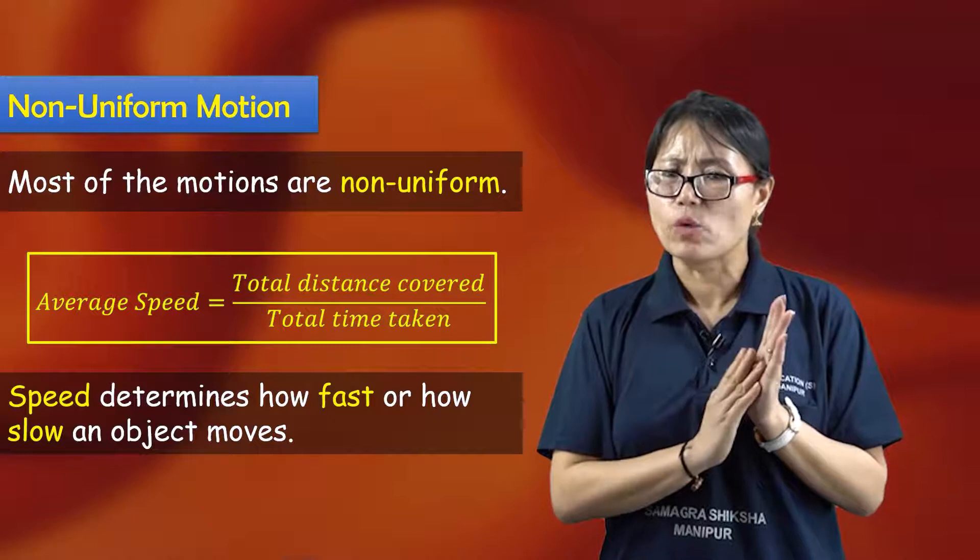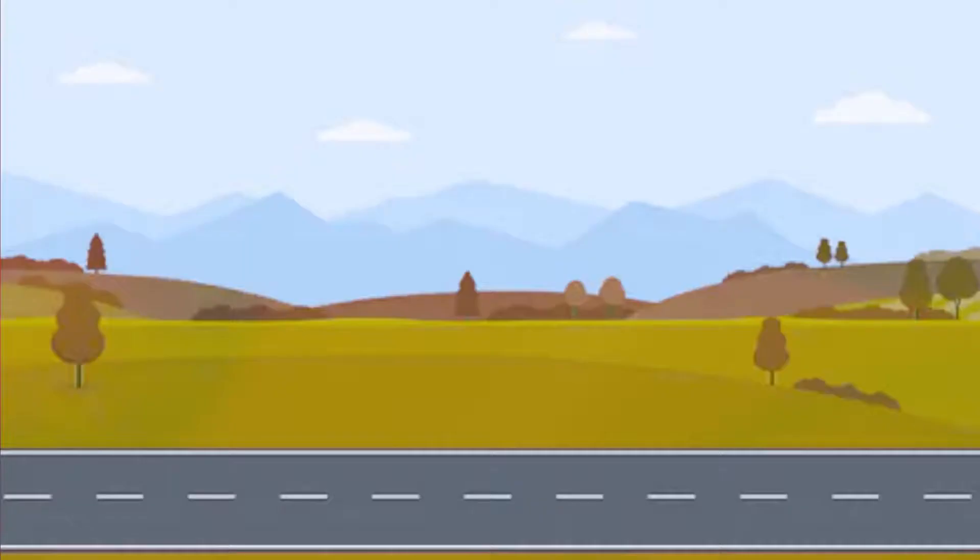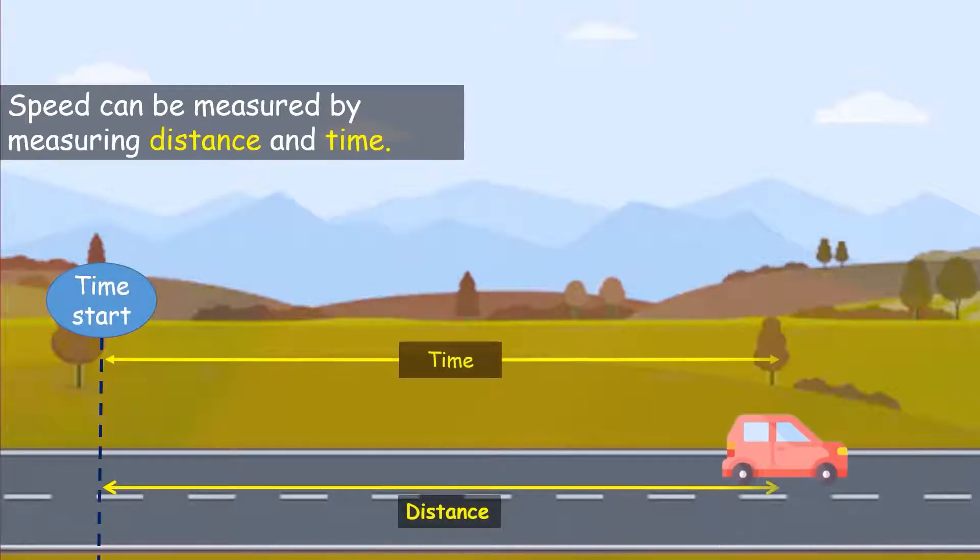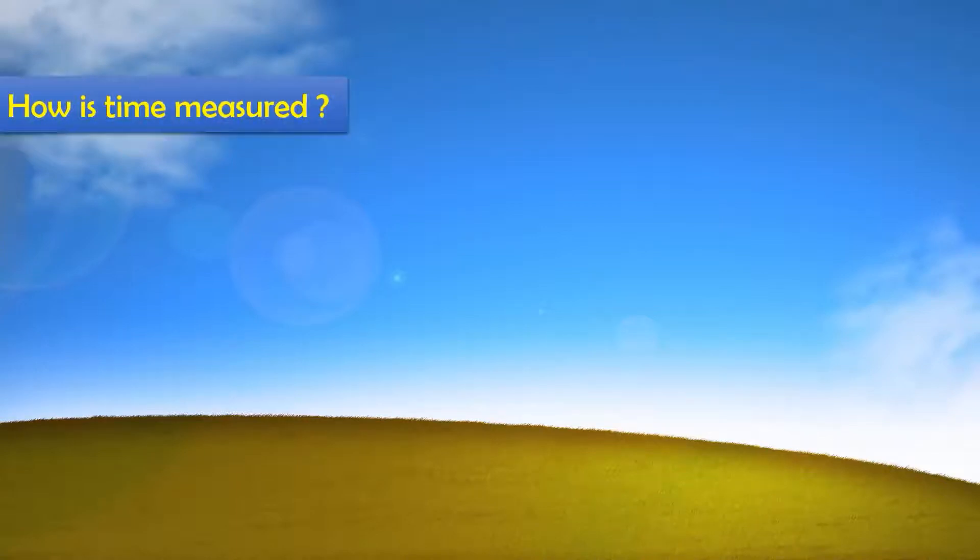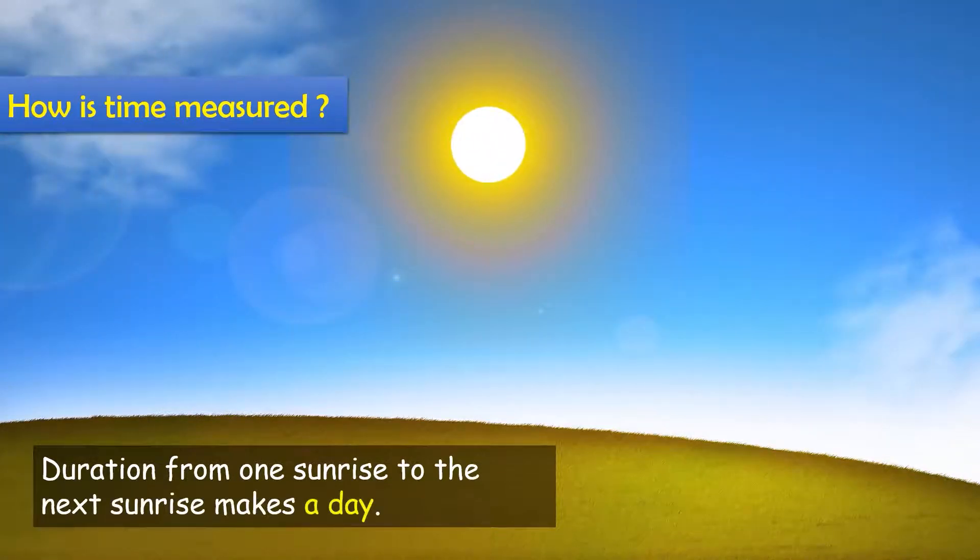Now for measurement of time, we need to discuss this. We use periodic events, which repeat at fixed time intervals, like sunrise. Sunrise occurs at fixed intervals. These periodic events help us measure time.